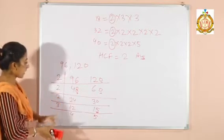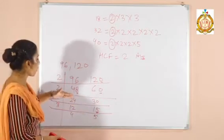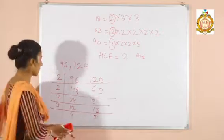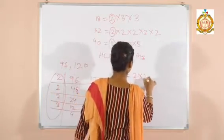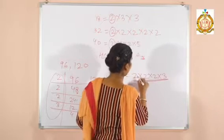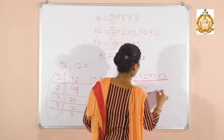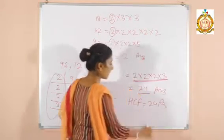Now, there is no common factor between 4 and 5. So proceed in this manner till no factor is common between the remaining numbers. Now the product of the common factors: 2 × 2 × 2 × 3. The product of all these common factors: 2 × 2 = 4, 4 × 2 = 8, 8 × 3 = 24. So 24 is the HCF. This is your answer.